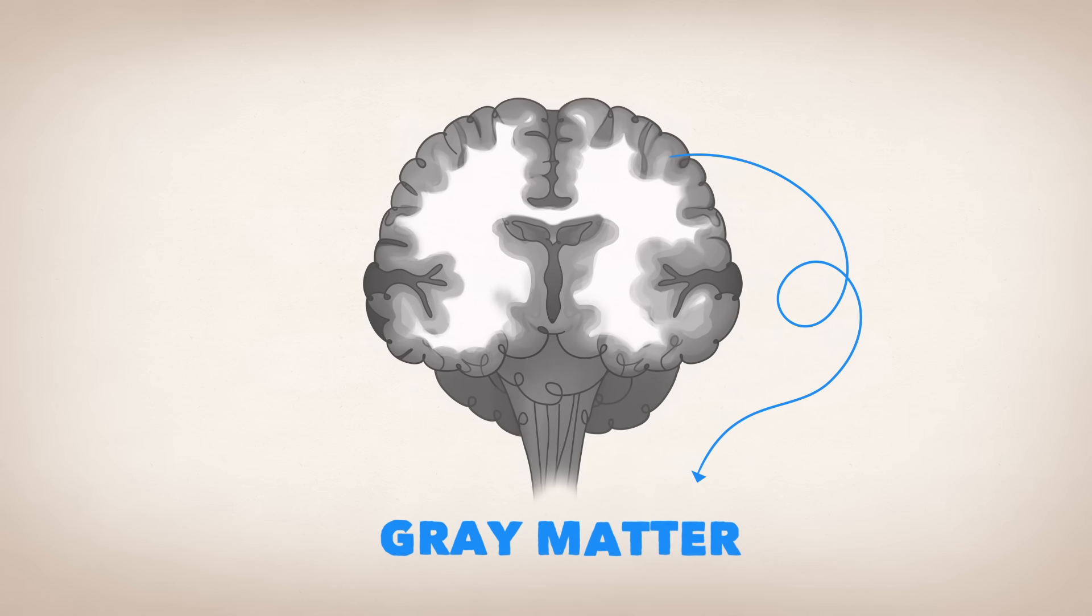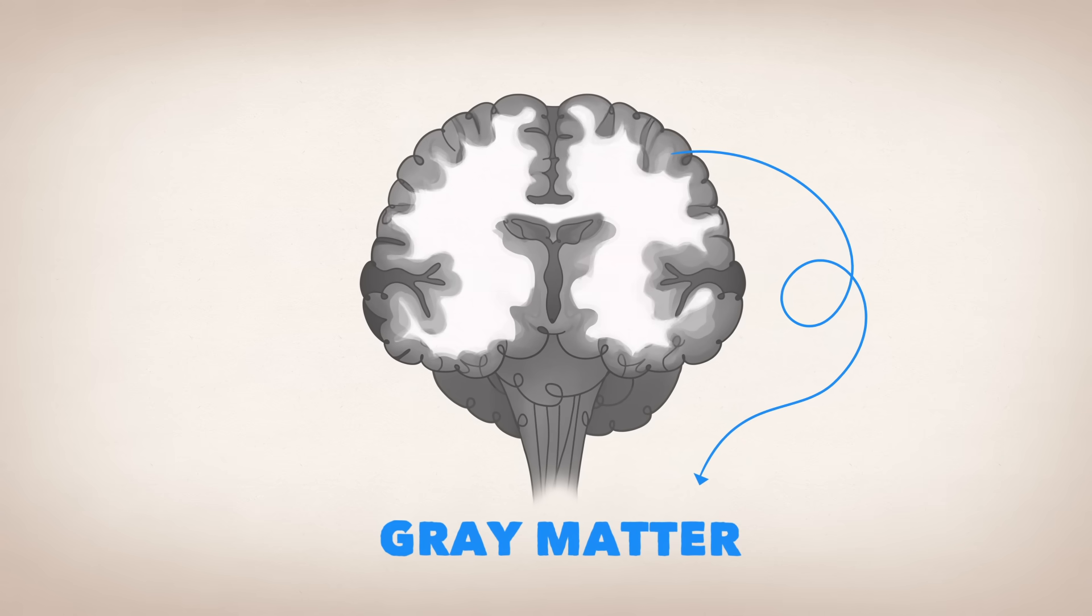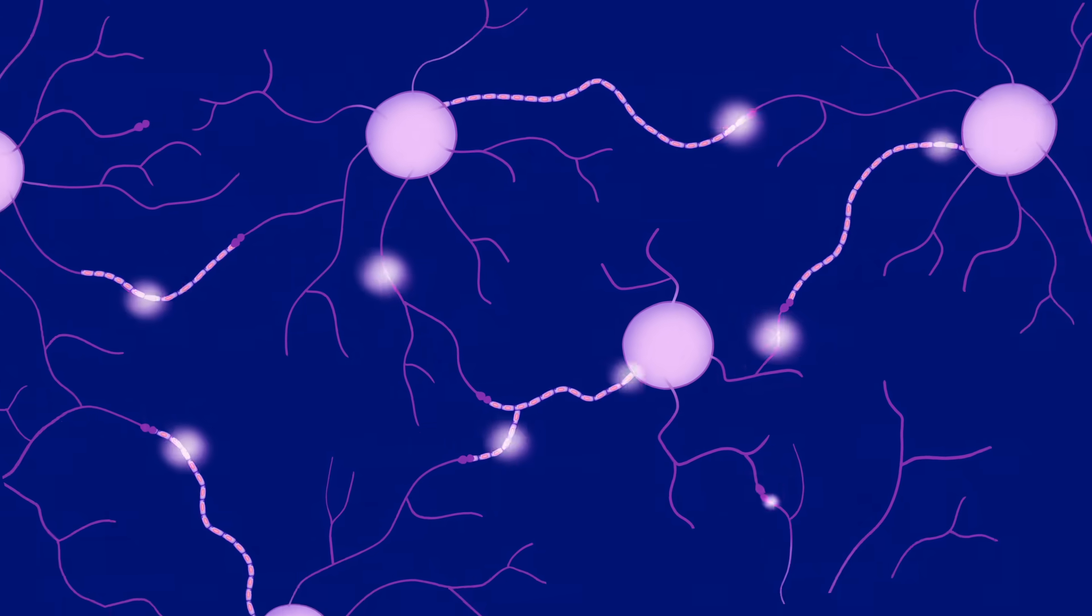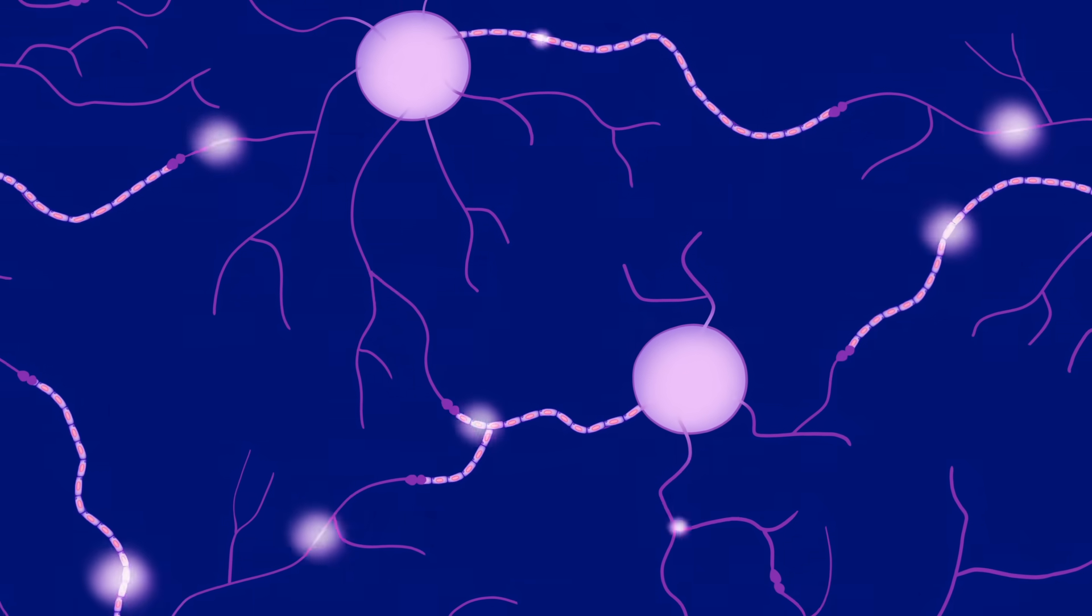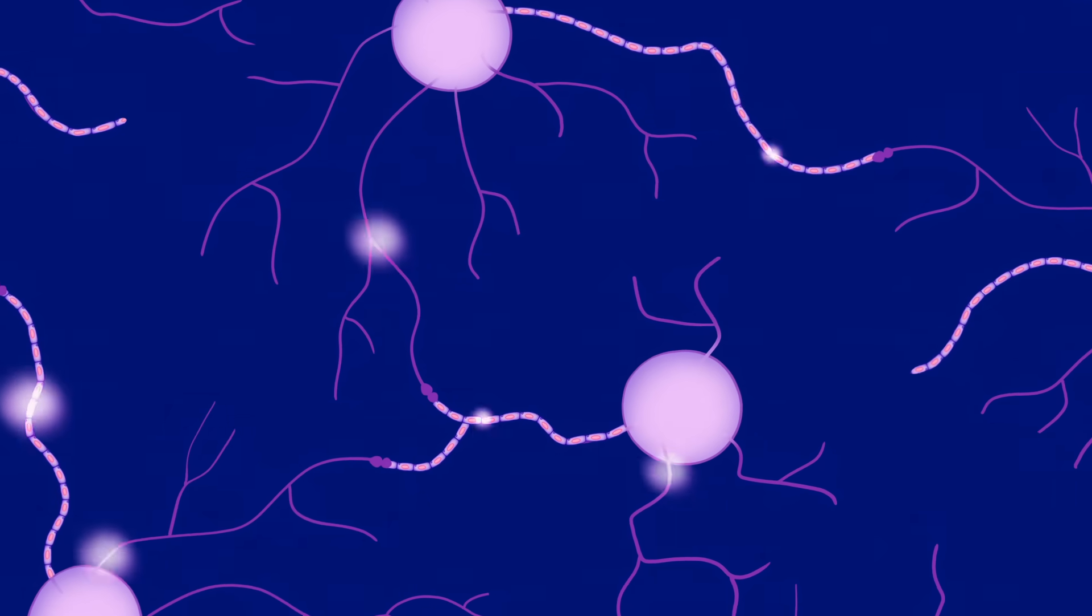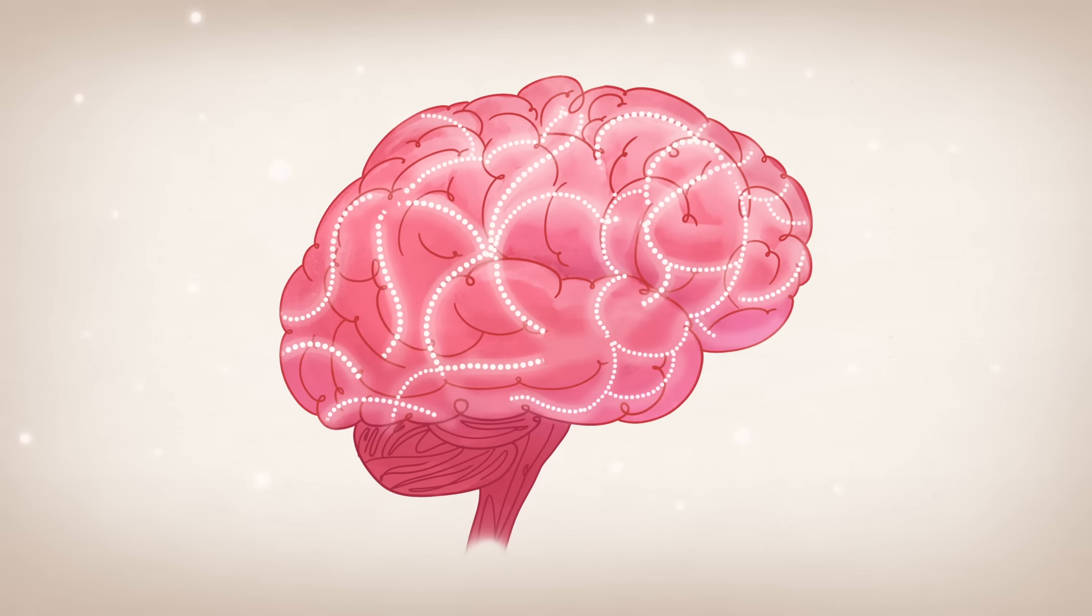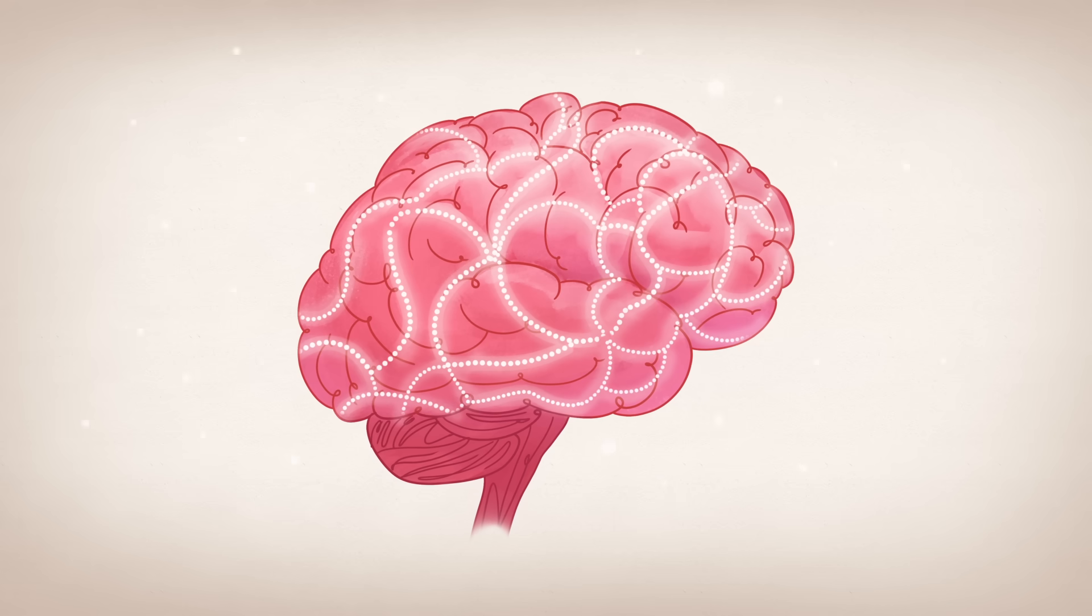While a reduction may seem like a bad thing, what's happening is a selective pruning. Connections that are used are kept and strengthened, while underused ones are weeded away, creating a brain that is both fine-tuned to its environment and energy efficient.